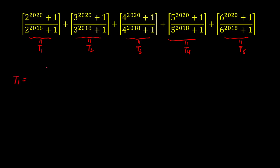I'll generalize for T2, T3, and so on up to the fifth term. The first term is [2^2020 + 1] / [2^2018 + 1].